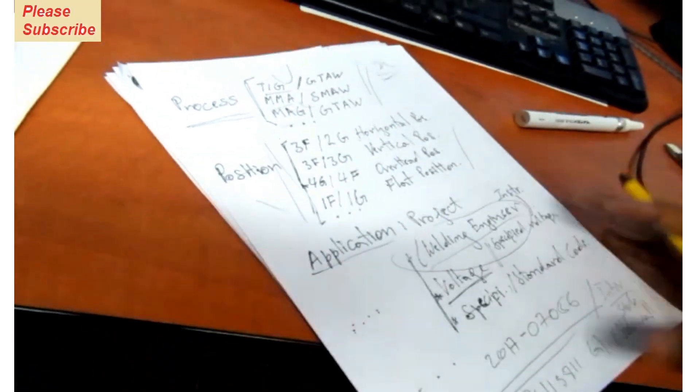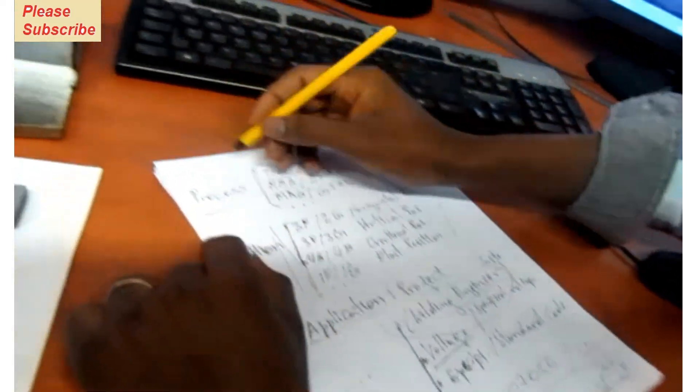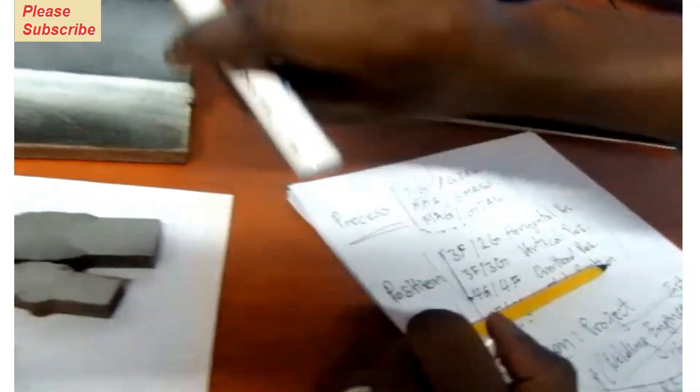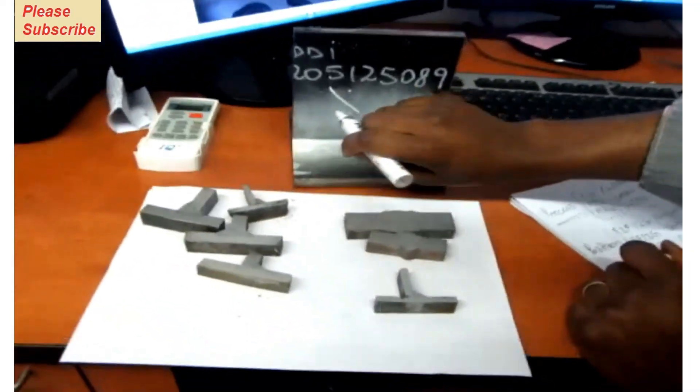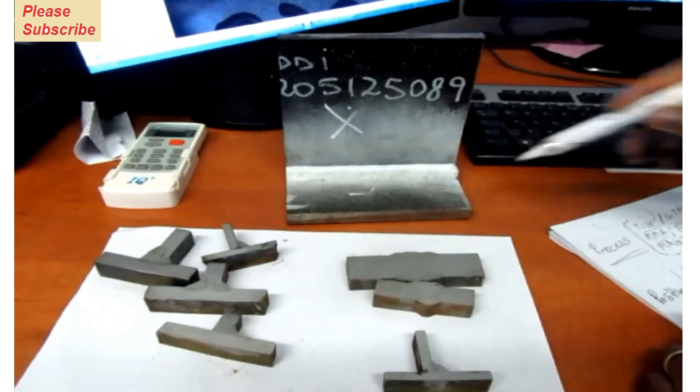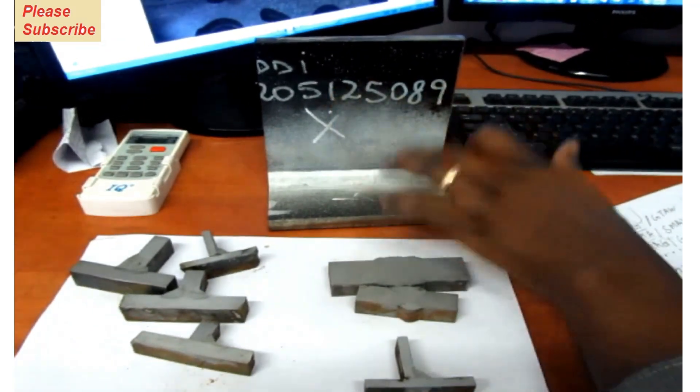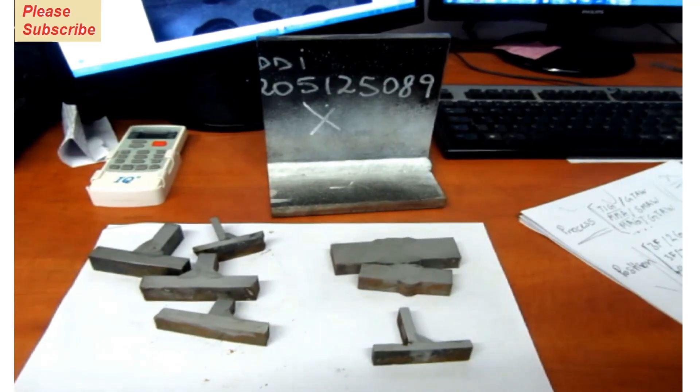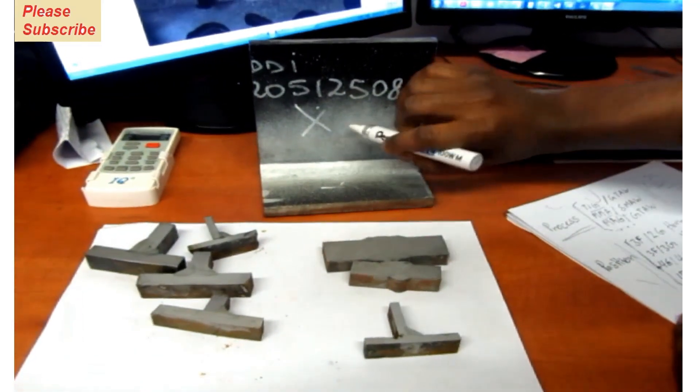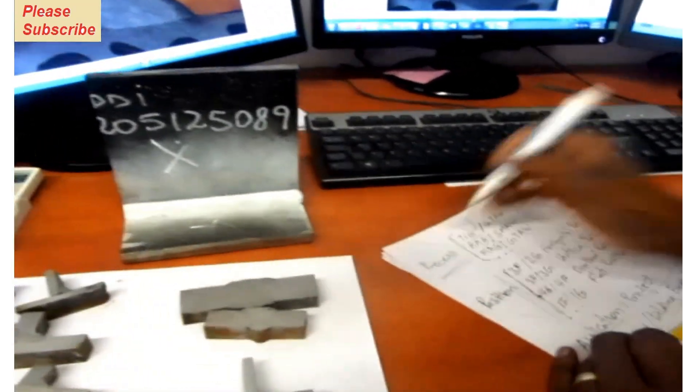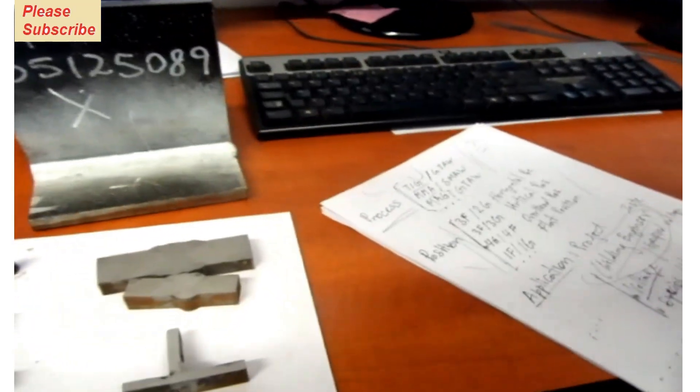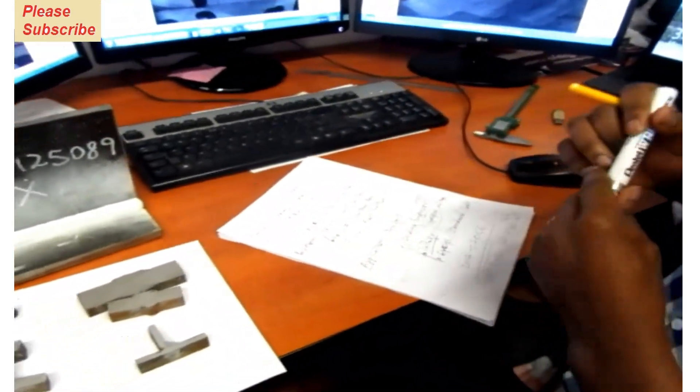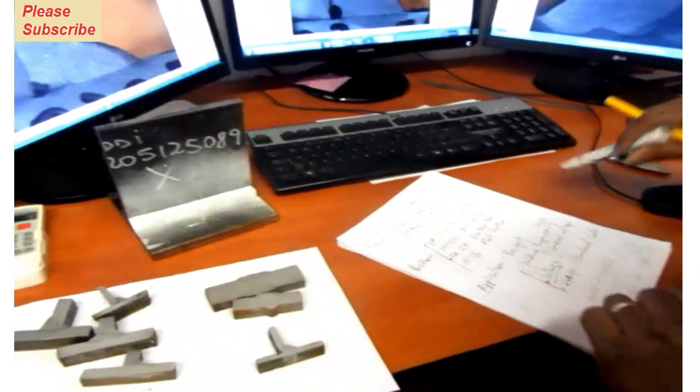Then for the welder to be part of the project, the welder must go and weld this kind of stuff that you see there. He's gonna weld these two plates with the specific position that the welding engineer said, with the specific process specified here. After he finishes everything with the specification, with the voltage, everything is done.